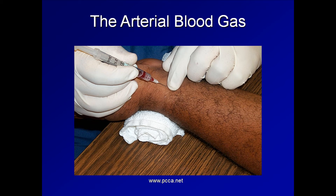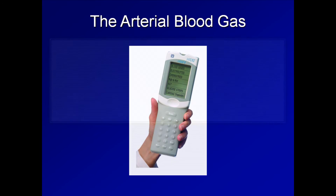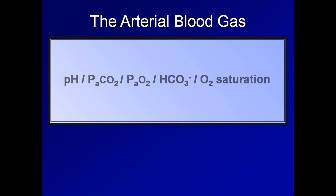The blood is then injected into a small cartridge, which is usually fed into a handheld ABG analyzer. This is a picture of the i-STAT, one particular model of ABG analyzer which is one of the most commonly used such devices in the United States. Depending on the exact model of analyzer and on the type of cartridge used, the ABG can provide an array of various measurements. In addition to the three already mentioned, it also always includes the bicarbonate level as well as the arterial O2 saturation of hemoglobin.